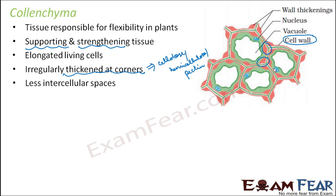This is one cell, this is one cell, this is one cell. Please do not misinterpret this white area as intercellular space — that is a vacuole. Vacuole is something which is present inside the cell. When we say intercellular space, that means an open space between two cells. Do you see any empty space between the two cells? Not really. So the intercellular space is very small or almost absent.